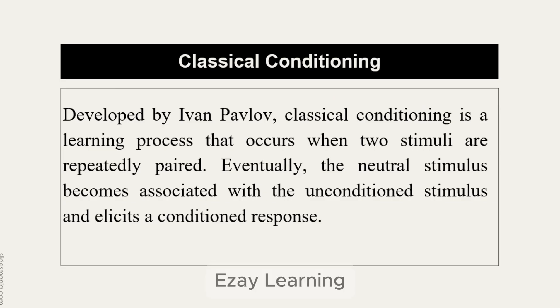Classical conditioning was developed by Ivan Pavlov. It is a learning process that occurs when two stimuli are repeatedly paired. Eventually, the neutral stimulus becomes associated with the unconditioned stimulus and elicits a conditioned response. So basically, we are pairing two different stimuli — one is neutral, the other is unconditioned — and when we associate them, it elicits a conditioned response.